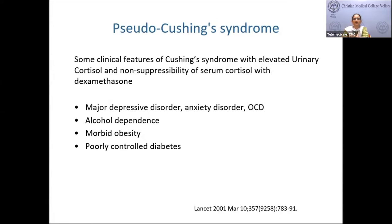There is another entity called pseudo-Cushing's syndrome, which resembles Cushing's in some clinical features. Patients can have mildly elevated serum and urinary cortisol levels that may be partially unsuppressible with dexamethasone. This is seen with depression, alcohol dependence, morbid obesity, and poorly controlled diabetes. When the underlying cause is treated, the symptoms and cortisol excess revert to normal. It is not actually cortisol excess but rather activation of the hypothalamo-pituitary-adrenal axis.